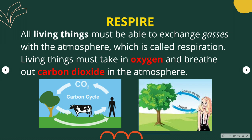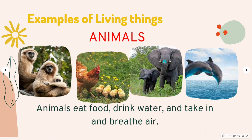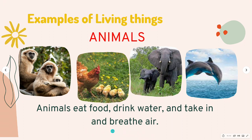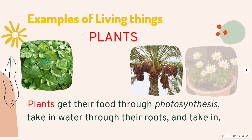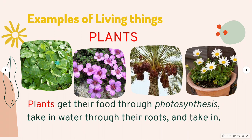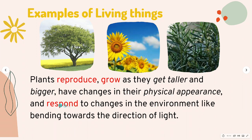Living things must take in oxygen and breathe out carbon dioxide into the atmosphere. All living things reproduce. Reproducing is the process of giving birth — like a cat gives birth to a kitten, and a human gives birth to children. Plants also reproduce. Animals such as monkey, chicken, elephants, and dolphins eat food, drink water, and breathe air. Animals give birth to their young ones, grow bigger, and have changes in their physical appearance. They respond to changes in the environment, like running away from those who attack them. Plants get their food through photosynthesis — a process by which green plants transform light energy into chemical energy — take in water through their roots, reproduce, grow taller and bigger, have changes in their physical appearance, and respond to changes in the environment, like bending towards the direction of light.